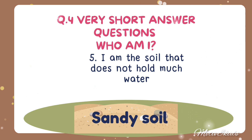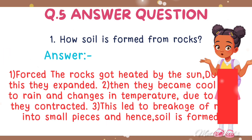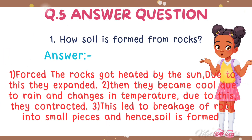The last question is long and short answer questions. First: How is soil formed from rocks? The rocks got heated by the sun; due to this they expanded. Then they became cold due to rain and changes in temperature; due to this they contracted. This leads to breakage of the rocks into small pieces, and hence soil is formed. I discussed soil formation in a previous video — please go and watch that video.